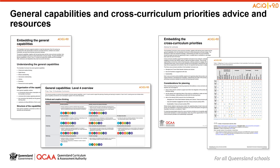These QCAA resources identify the connections ACARA has made between learning areas and the general capabilities. Level overviews provide an overview of where the general capabilities can be developed or applied in the content descriptions. There are also Continua for five of the general capabilities which provide more detailed information about the capabilities in the form of elements and sub-elements. This resource provides a sequence of learning for the capability from Level 1 to Level 6, which can be helpful for teachers when catering for students with diverse needs.